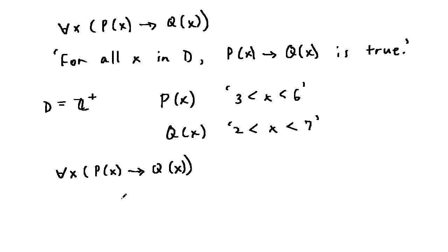If it's not so, then this statement is false. Since any positive integer greater than 3 is also greater than 2, and any positive integer less than 6 is also less than 7, our statement for all x, P(x) entails Q(x) is true.